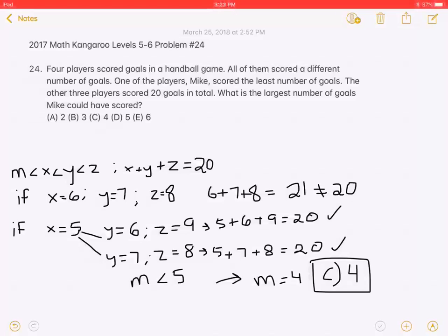Four players scored goals in a handball game. All of them scored a different number of goals. One of the players, Mike, scored the least number of goals.